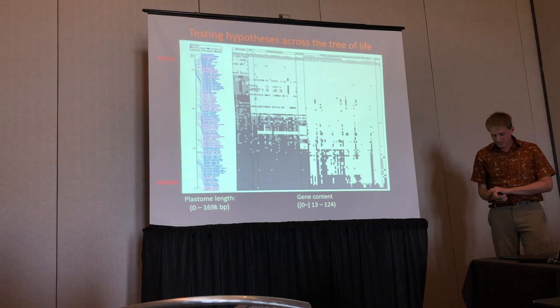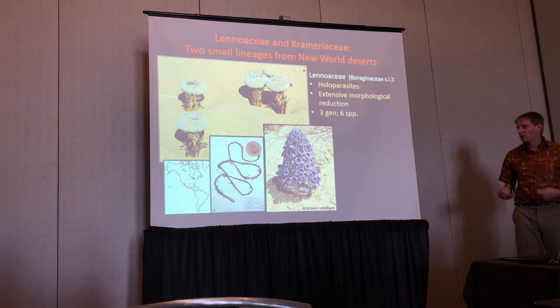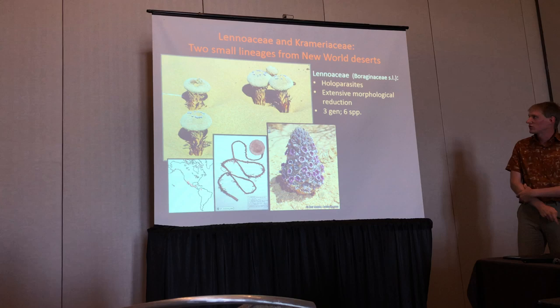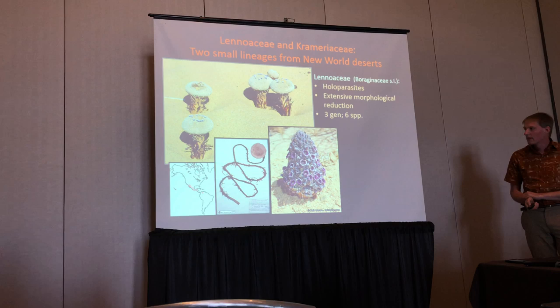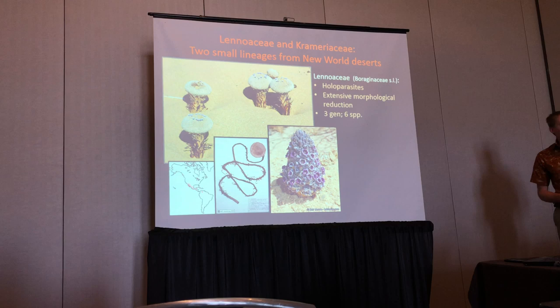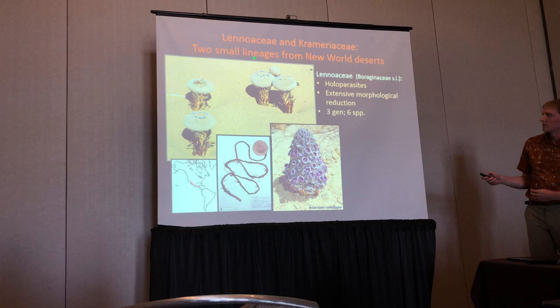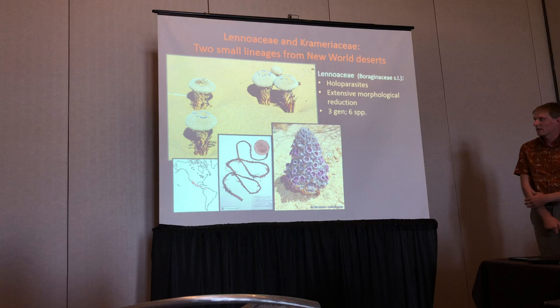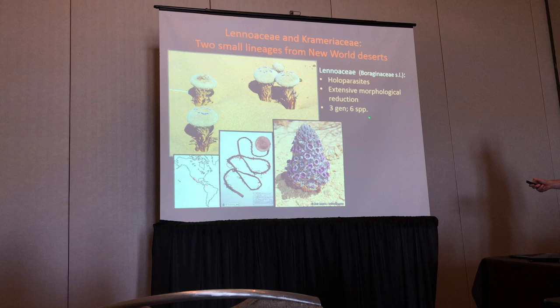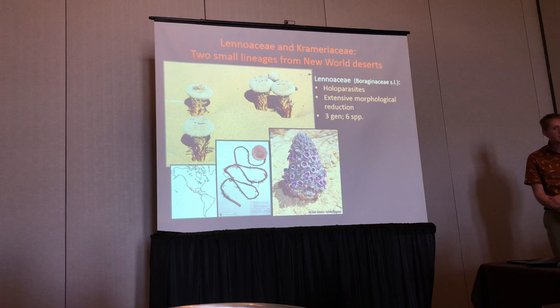So, getting to the meat of this talk — what are we learning now from this study about these last two lineages? To introduce the system: we have the Lenoacee, which can also be treated as a lineage within the more traditionally circumscribed Balanophoraceae. These are bizarre, highly morphologically modified plants — you have inflorescences growing right out of the desert sand — showing very extensive morphological reduction, but relatively little diversification in terms of lineages. This is maybe the reason why people haven't looked at this as carefully as some other lineages.